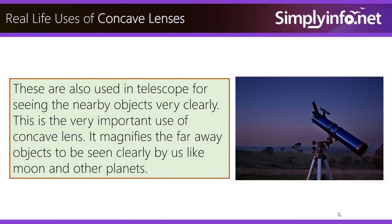Concave lenses are also used in telescopes for seeing objects very clearly. This is a very important use of concave lens, as it magnifies far away objects to be seen clearly by us, like the moon and other planets.